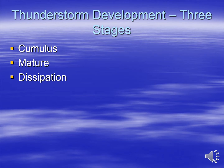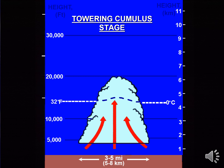Assuming all of these ingredients are in place, the first stage of thunderstorm development is known as the towering cumulus stage. During this stage, warm and unstable air begins to rise; as it rises, it cools and the moisture condenses into liquid cloud droplets. Persistent rising currents of air, known as updrafts, cause the clouds to grow in height, looking like tall towers. In this initial stage, the clouds are dominated by updrafts.